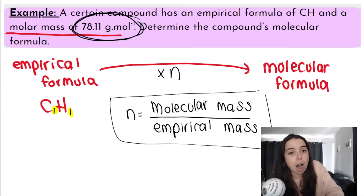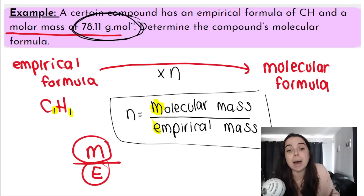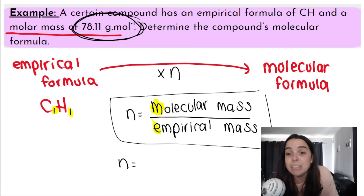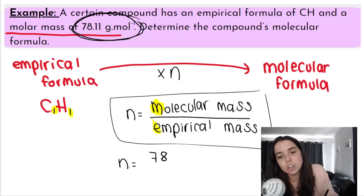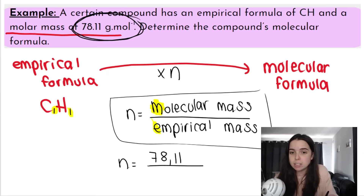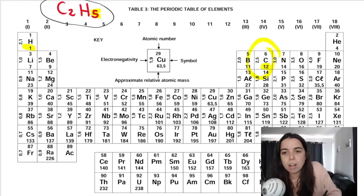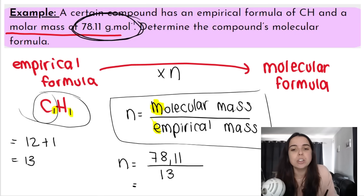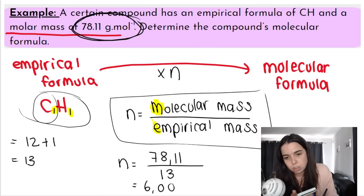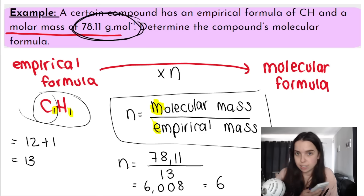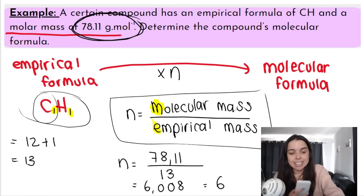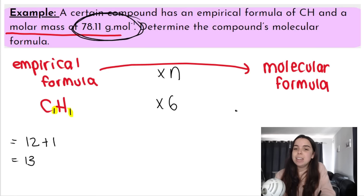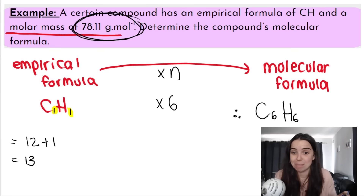The formula for n — which is not on your formula sheet — is n = molecular mass divided by empirical mass. I remember it as 'ME': M over E. The molecular mass is given in the question as 78.11. The empirical mass from CH is 12 + 1 = 13. So n = 78.11 ÷ 13 ≈ 6.008, which rounds to 6. Therefore we multiply C₁H₁ by 6, giving the molecular formula C₆H₆.